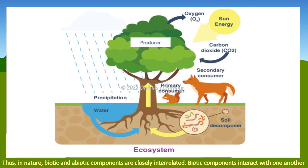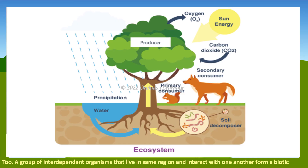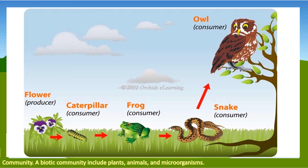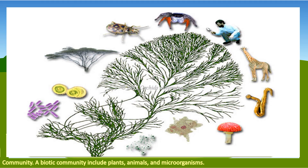Biotic components interact with one another too. A group of interdependent organisms that live in the same region and interact with one another form a biotic community. A biotic community includes plants, animals, and microorganisms.